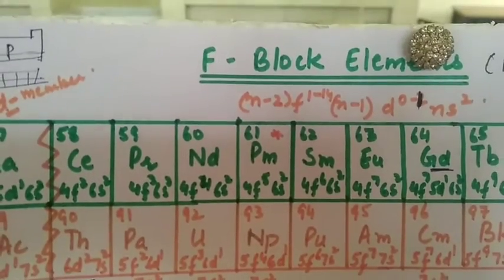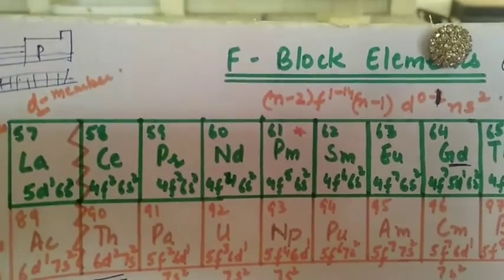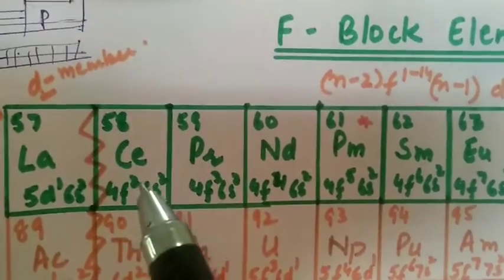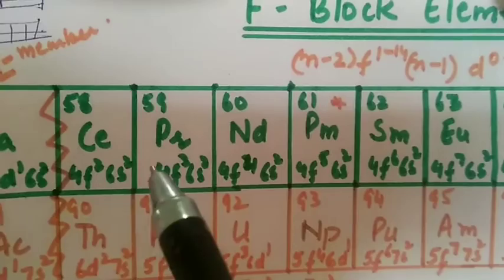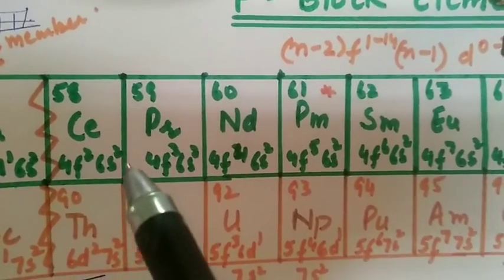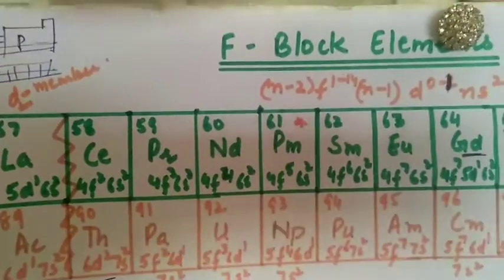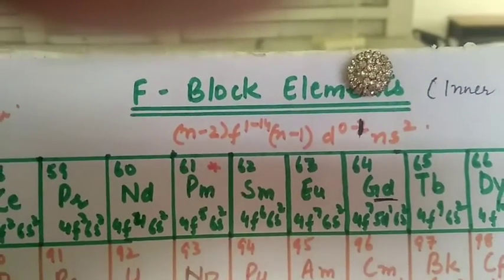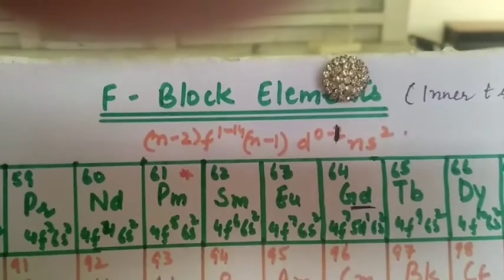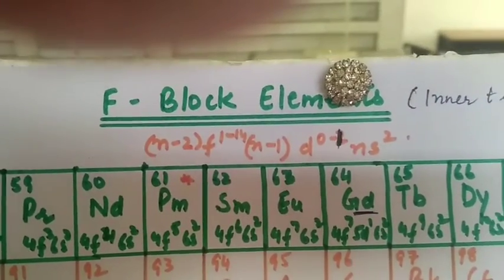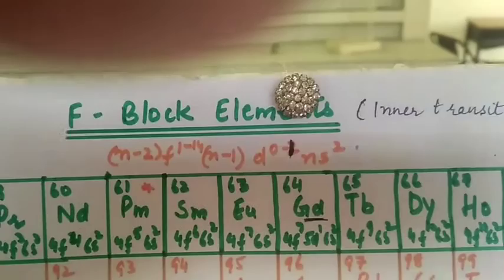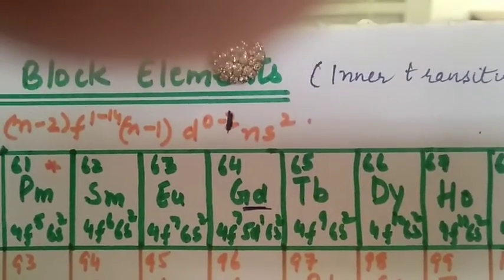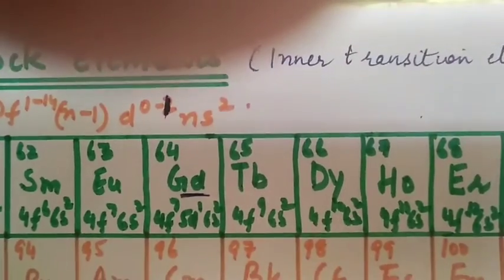The first property that we study is electronic configuration. First element cerium, atomic number 58, electronic configuration will be xenon 54, 6s^2 (56), and 4f^2 (58). Similarly, praseodymium 59 has xenon 4f^3 6s^2, neodymium 4f^4, promethium 4f^5, samarium 4f^6, europium 4f^7.